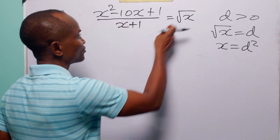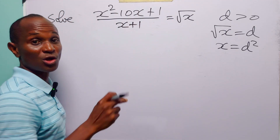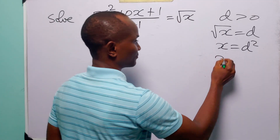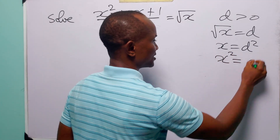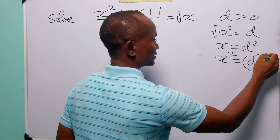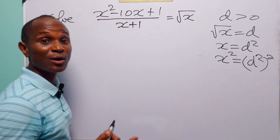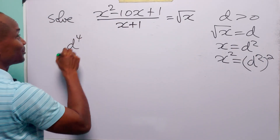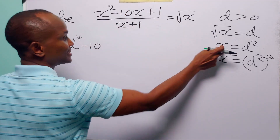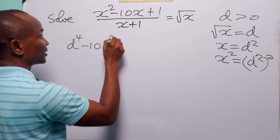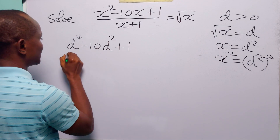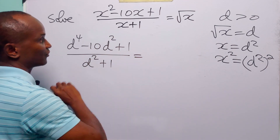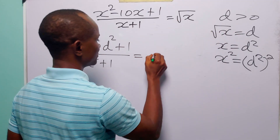The next thing we are going to do is to rewrite the original equation in terms of d. Here we have x squared. x squared is going to be equal to d squared squared, and 2 times 2 is equal to 4, so this is going to be equal to d to the power 4 minus 10d squared plus 1 divided by d squared plus 1. And of course, this is equal to d.